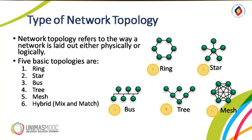Now we move to the next section, which is the type of network topology. The term physical topology refers to the way in which a network is laid out physically, as you can see in your right hand side diagram. Two or more devices connect to a link; two or more links form a topology. The topology of a network is the geometric representation of the relationship of all the links and the linking devices, usually co-nodes to one another.